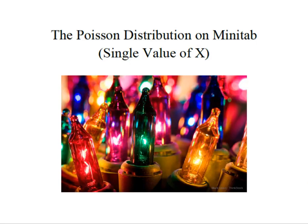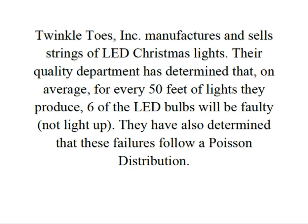Hey everybody, it's Professor Williams. Today we're going to look at the Poisson distribution on Minitab. We're going to solve for a single value of X. Twinkle Toes manufactures and sells strings of LED Christmas lights. Their quality department has determined that on average for every 50 feet of lights they produce, six of the LED bulbs will be faulty.